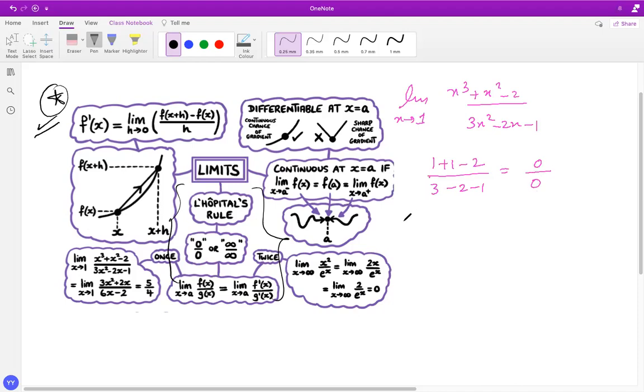Now, since it is of that format, I can apply L'Hôpital's Rule, which is same as differentiating the numerator and denominator separately. Please do not take the quotient rule here. The quotient rule doesn't work. So what I do is basically, the derivative of numerator is x³ derivative is 3x², the derivative denominator is 2x minus 0, over, if you take here, I get 6x minus 2.